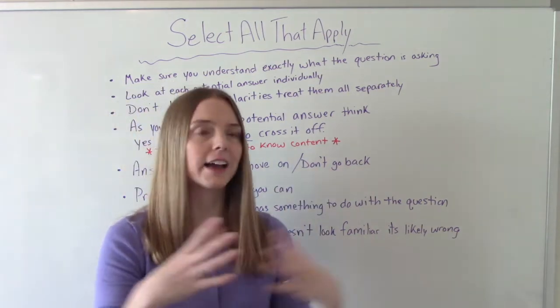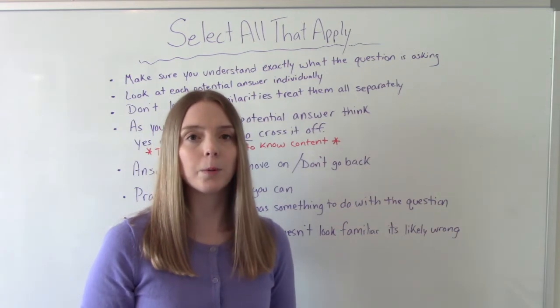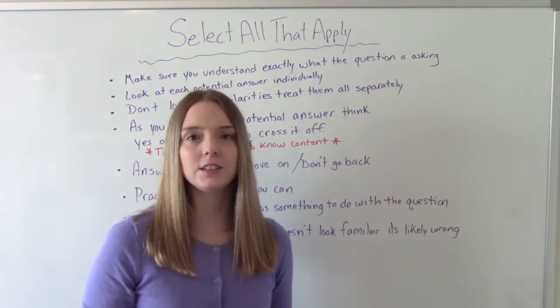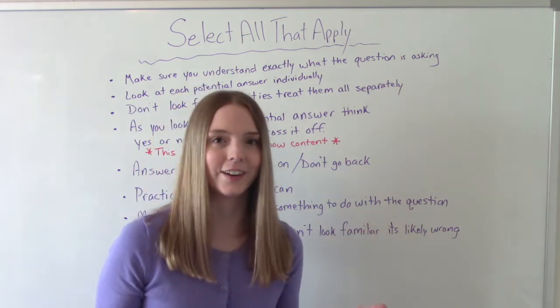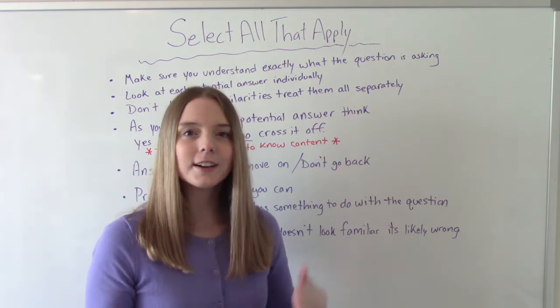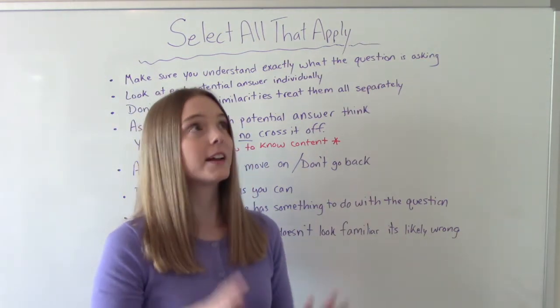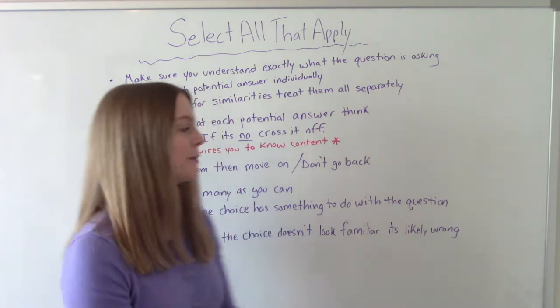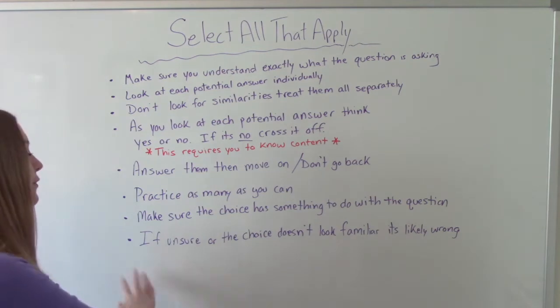So if the question is about diabetes, and one of the potential answers says a normal pulse on an adult is 60 to 100 beats per minute. Yes, that is a true statement, right? That is a correct statement. But what does that have to do with diabetes, right? What does that have to do with the question you were asked? So making sure even though it is a correct statement, does that statement have to do with the question?